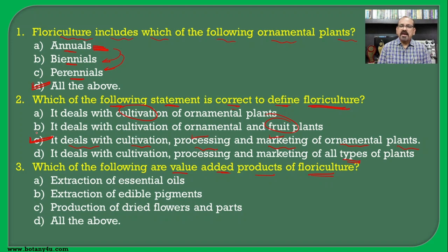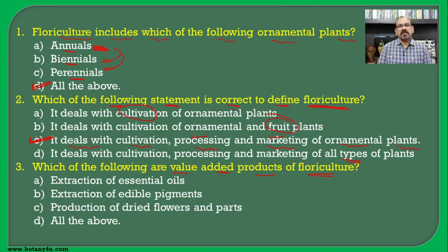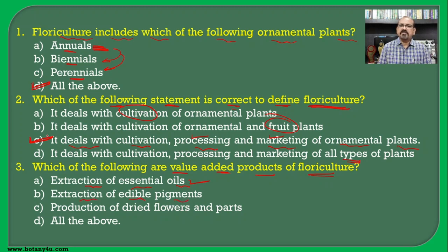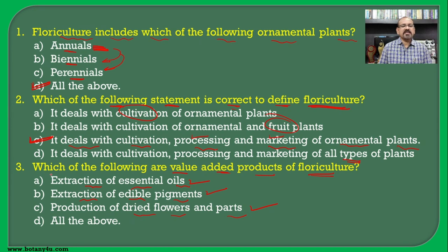Which of the following are value-added products of floriculture? In addition to the flowers and ornamental plants, other products are also taken into consideration, including extraction of essential oils, extraction of edible pigments, and production of dried flowers and parts, which are big industries in the world. Hence all three are correct and D is the correct answer.